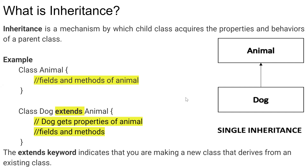Inheritance is the mechanism by which a child class acquires the properties and behaviors of a parent class. On the right-hand side we have an Animal class, and Dog inherits the properties and behavior of the Animal class. On the left-hand side we have the code — class Animal, and below that class Dog that extends from Animal. So Dog gets all the properties and behaviors of Animal class — that is inheritance in Java.